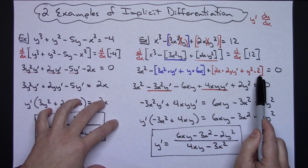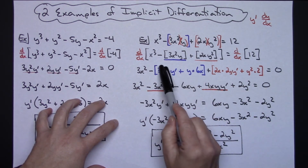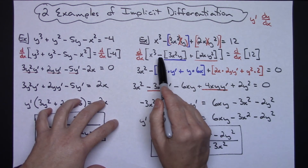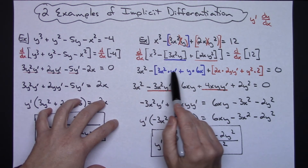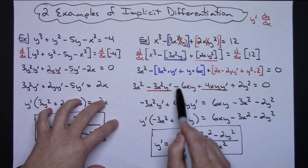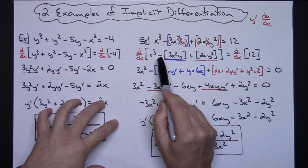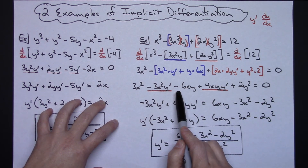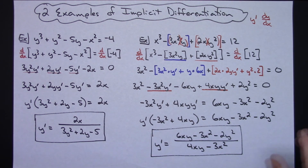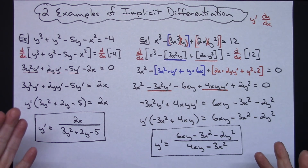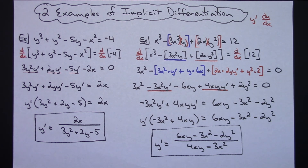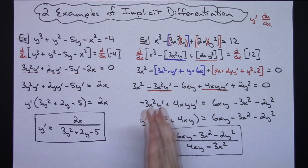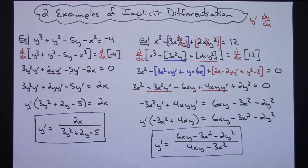That's a straightforward implicit differentiation problem, but with two product rules I highly recommend boxing them off. If you don't pay attention you will drop the negative from that minus product rule — that's the negative that usually gets dropped. Thanks for watching, and if you need more examples of implicit differentiation keep your eyes open because I'll be doing more. Don't forget to subscribe to the channel.